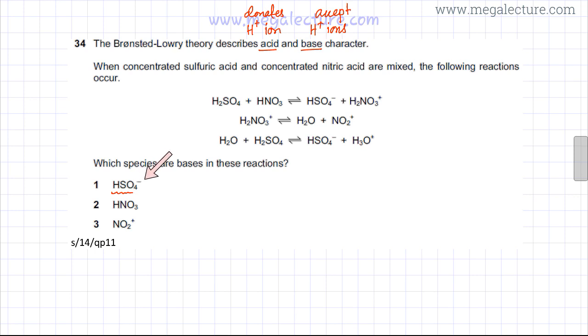The first option is HSO4- and we need to decide whether it's a base or an acid. We need to figure out where HSO4- is appearing - it's appearing in two places. If you look at the first reaction in the backward direction, this HSO4- ion changes into H2SO4. When HSO4- changes into H2SO4, it's accepting an H+ ion, and bases are substances that accept H+ ions. So this first option looks perfectly correct.